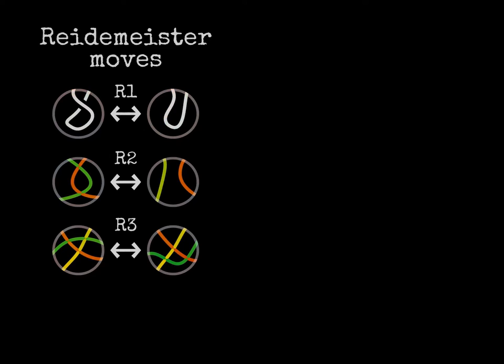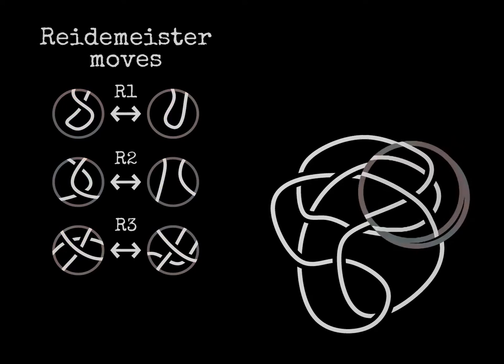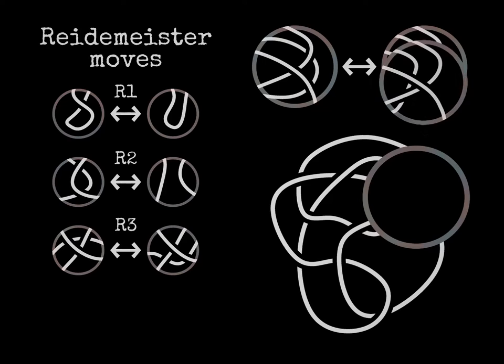We can also draw them in the broken arc diagram notation. Here is how they work. We replace a small disk looking like one side of the move with a disk looking like the other side.